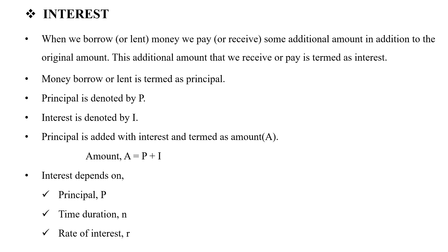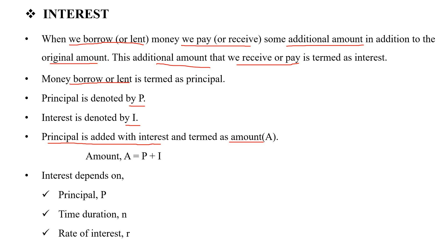Next, we will go to interest. When we borrow or lend money, we pay or receive some additional amount in addition to the original amount. This additional amount is termed as interest. The original amount borrowed or lent is called the principal P, the interest is I, the time duration is N, and the rate of interest is R. The amount A is equal to P plus I.